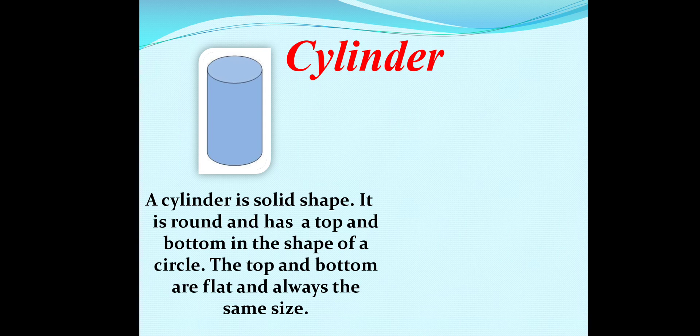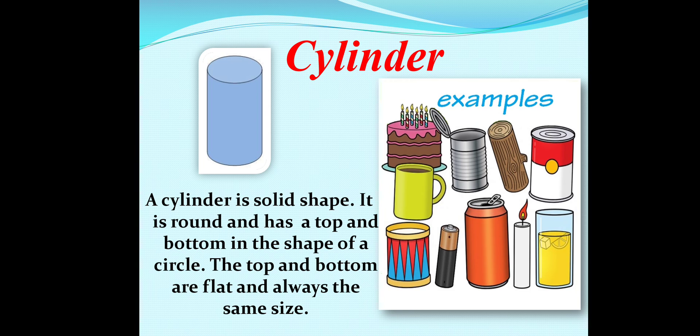The last one I want to discuss with you, my dear student, is cylinder. This shape is called cylinder. A cylinder is a solid figure. It is round and has a top and bottom in the shape of a circle. The top and bottom are flat and always the same size. Here are few examples of cylinder in this picture: cake, candle, glass, cell, teacup, cold ring tin and many more. I hope you have understood about solid shapes.